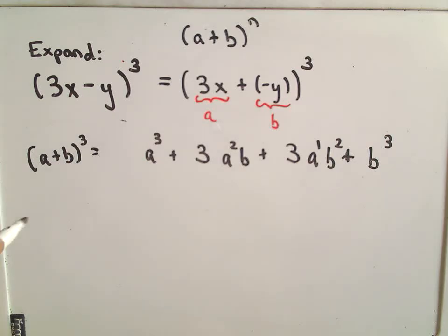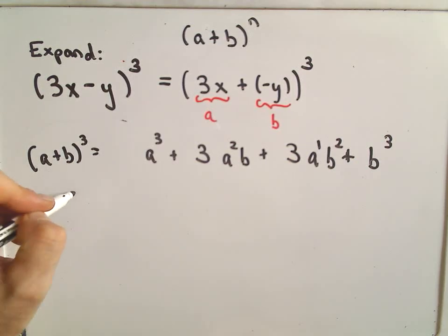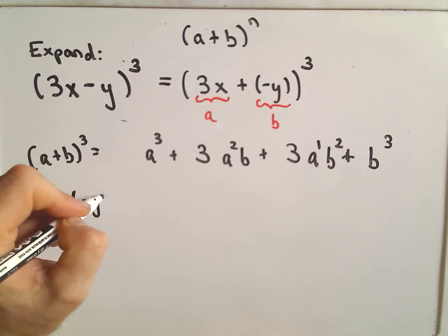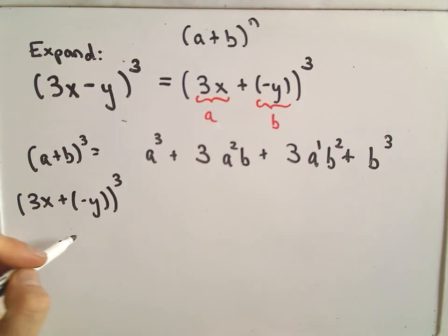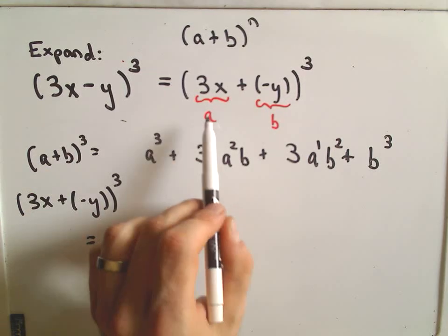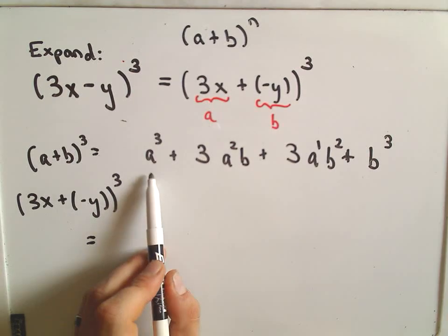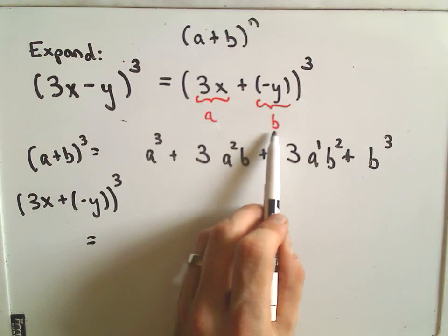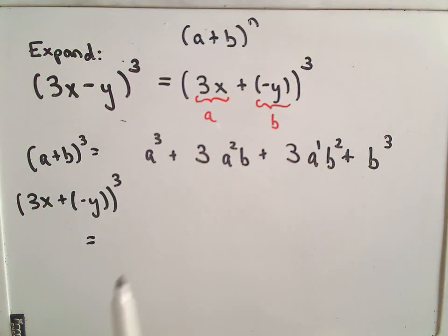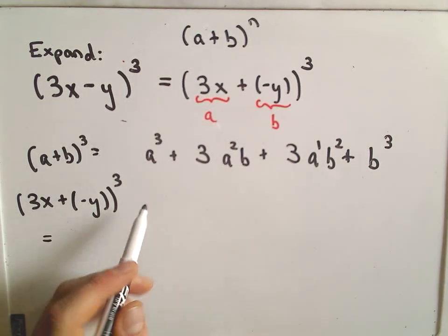Well, okay, again, now it's just really filling things in. So if I want to expand 3x plus negative y to the third power, I'm just going to plug everything in. Again, I'm replacing 3x, I'm replacing my a with 3x, and I'm going to replace my b value with negative y. So maybe I'll give myself a little room here.